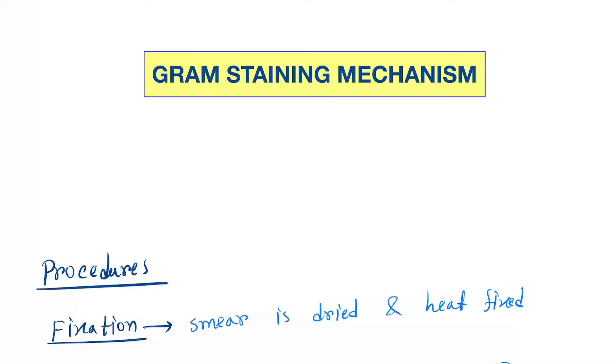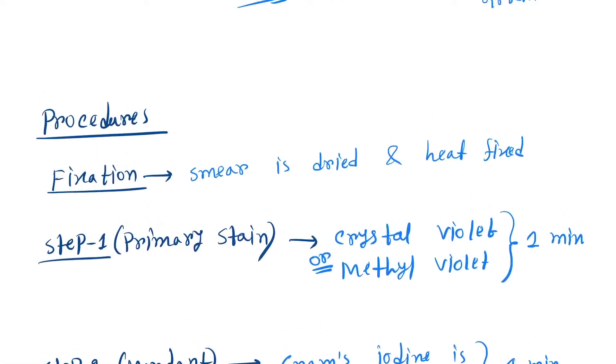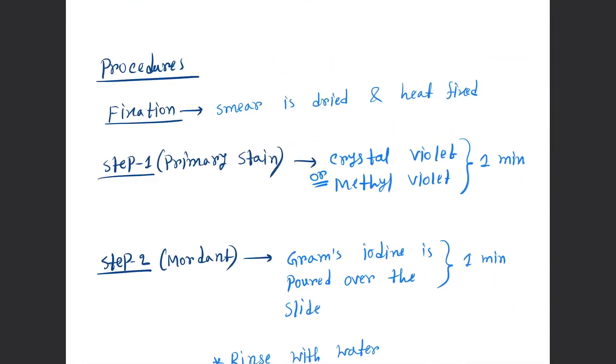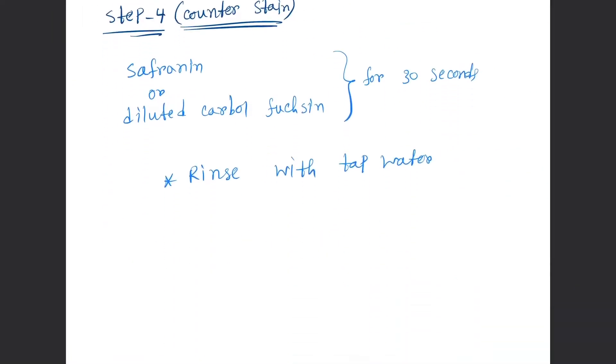Hello friends, today our topic is Gram staining. This is done for the staining of gram positive and gram negative bacteria. It was discovered by Hans Christian Gram. First we'll see the procedures and then we will discuss the mechanism.